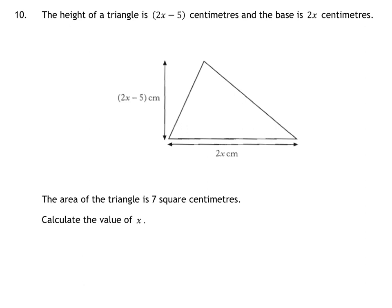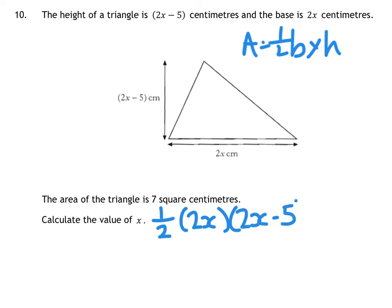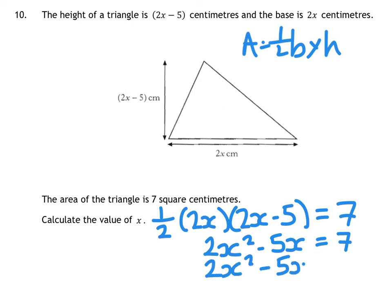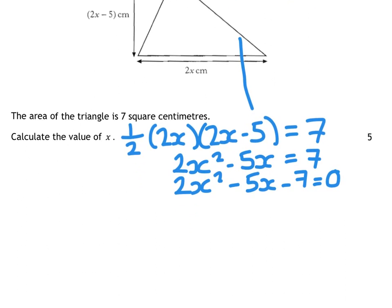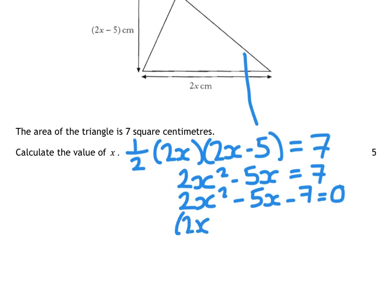And our last question tells us the area of this triangle is 7. We want the value of x. So area of a triangle is half base times height. So we know the area of this triangle. So we know that a half times our base of 2x times our height of 2x minus 5 equals 7. Now a half of 2 is just 1. So I've just got an x in front of the bracket. So multiplying that out gives me 2x squared minus 5x equals 7. It's looking a bit like a trinomial, so I'm going to bring that 7 over. And I've got a trinomial equal to 0. The minute you see a trinomial equal to 0, it means you have to factorise.